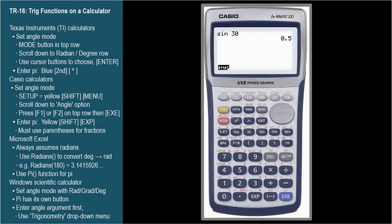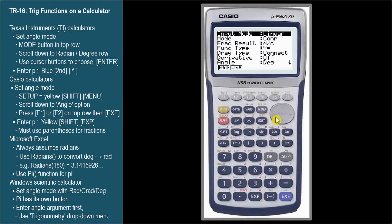To get the cosine of 5 pi over 6 radians, we need to switch to radian mode. Shift, Setup, scroll down to Angle, F2 for radians. Exit.